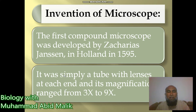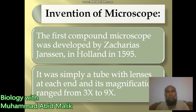The structure of the very first microscope was simply a tube with lenses at each end, and its magnification ranged from 3x to 9x. So the first microscope developed by Zacharias Janssen had the capacity to enlarge an image three to nine times.